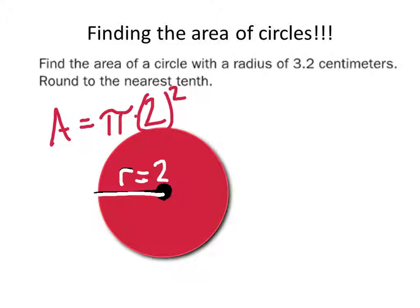So, 2 times 2 is 4. Now you've got pi times 4. And on your calculators, what does that give you? 12.56 or 12.6, good.